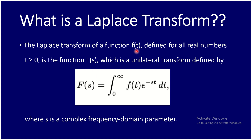The Laplace transform of a function f(t) is defined using this integral equation. It is defined for all real numbers where t is greater than or equal to 0. The function f(t) gets a transform in the form of F(s), which is a unilateral transform defined by the integral from 0 to infinity of f(t) times e to the power minus s·t with respect to dt, where s is a complex frequency domain parameter.